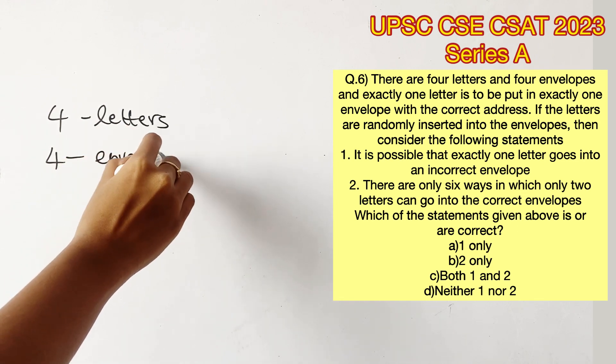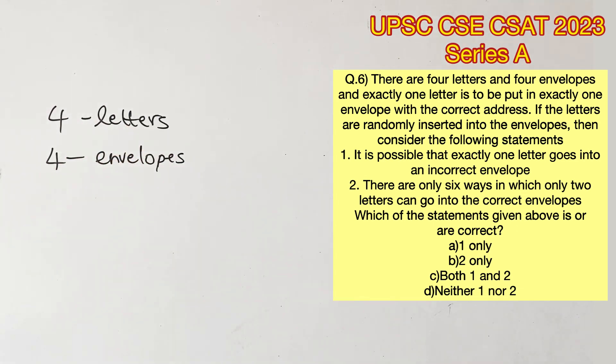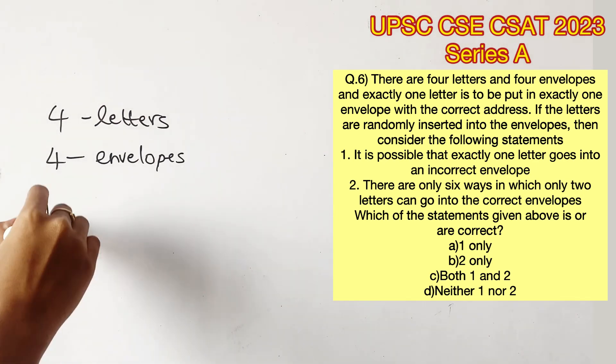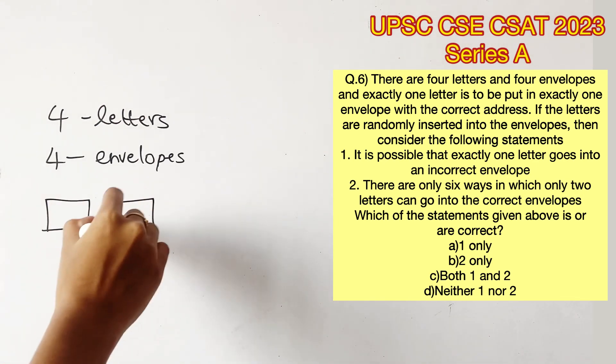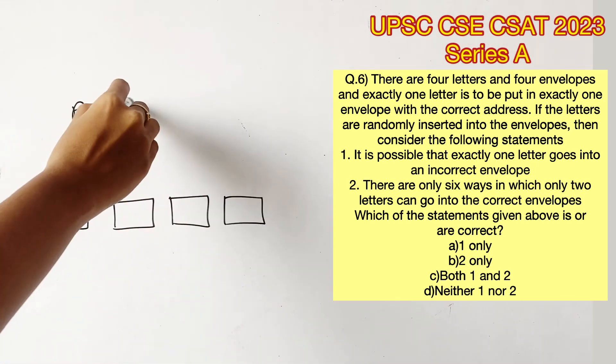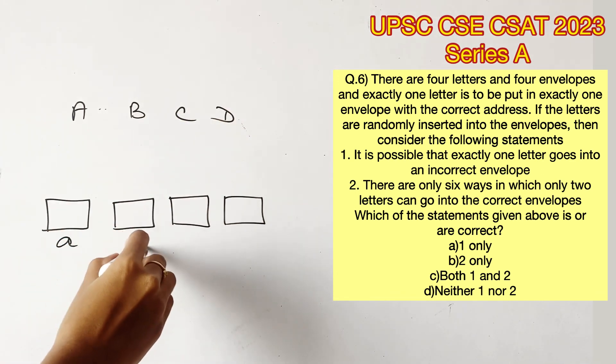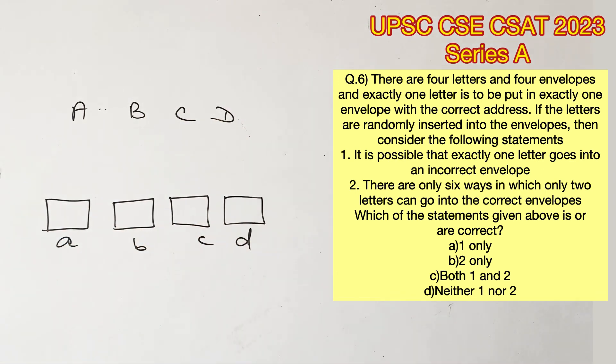So it is said that we have four letters and four envelopes and exactly one letter is to be put in exactly one envelope with the correct address. For example, let's say A, B, C, D which are letters and small a, b, c, d which are envelopes.